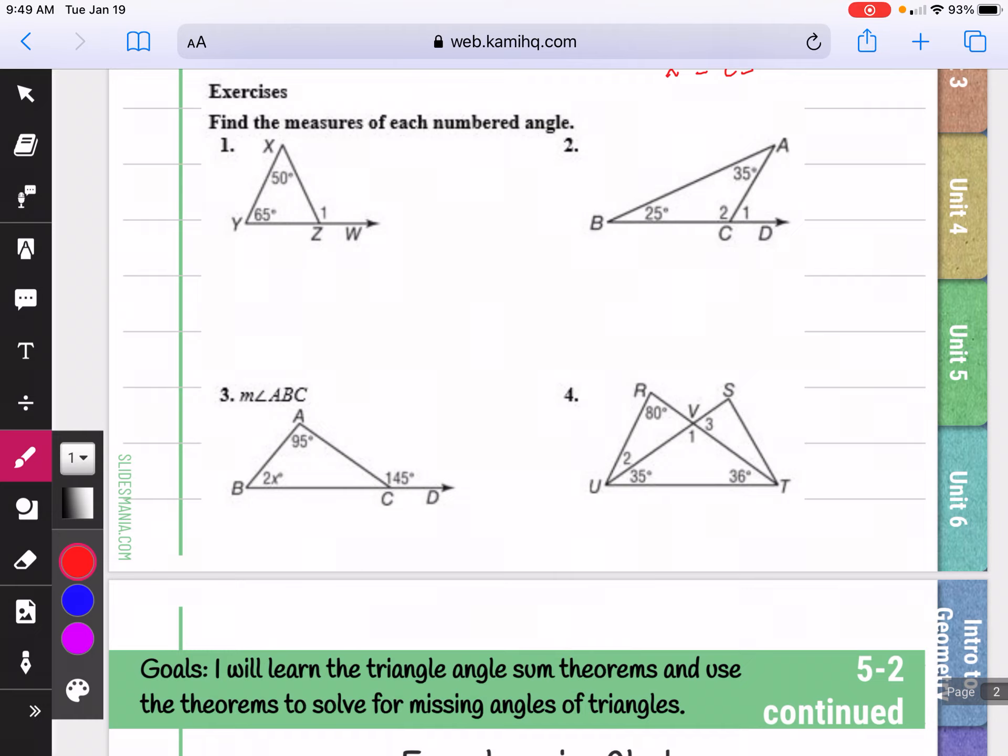Here we're going to continue using what we learned. So in this picture, we would add these two angles to get exterior angle one. So the measure of angle one would be 115 degrees.